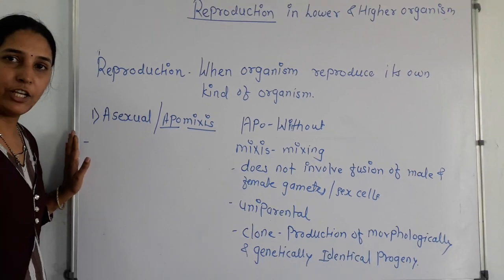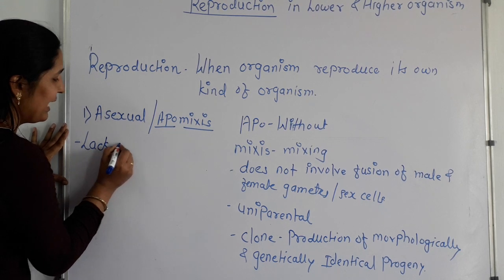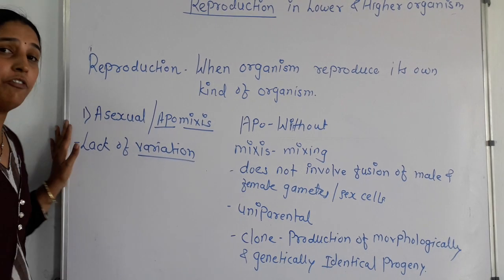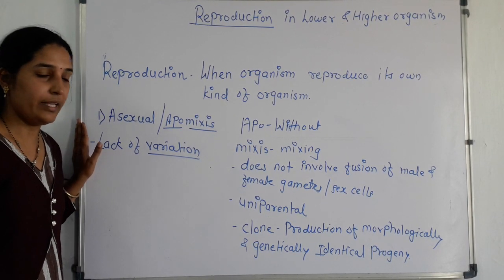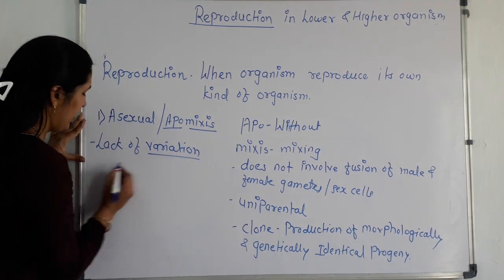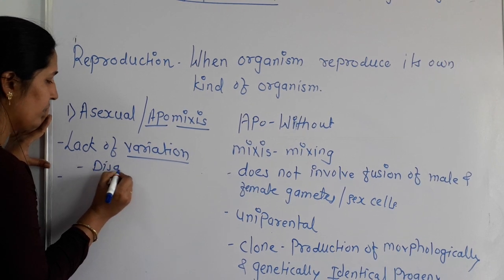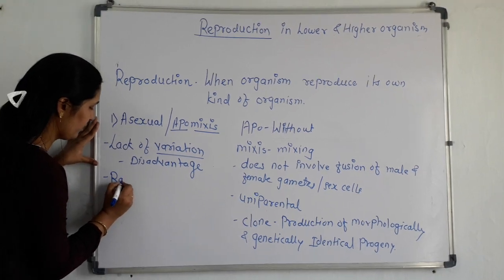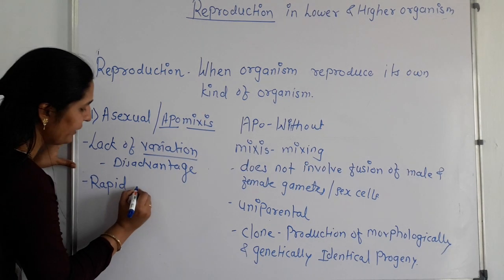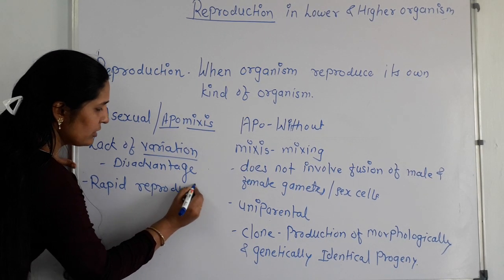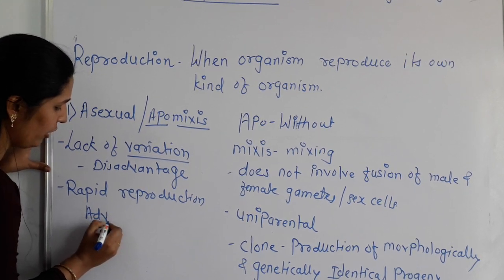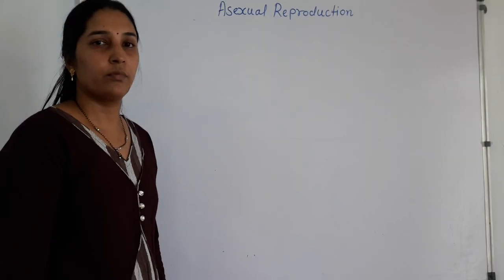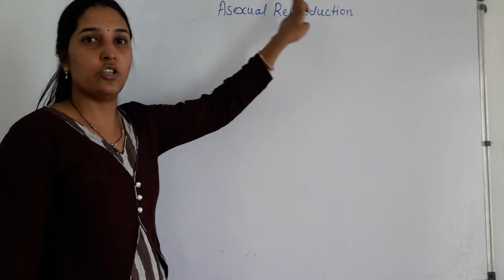One disadvantage of this reproduction is lack of variation. Variation means difference — there is no genetic recombination, that is a lack of variation. Through this reproduction, organisms can reproduce rapidly.